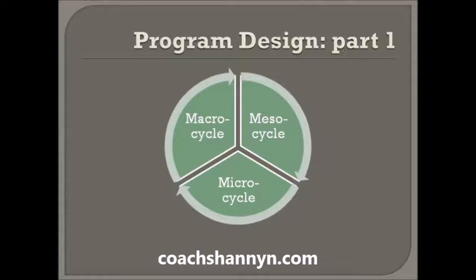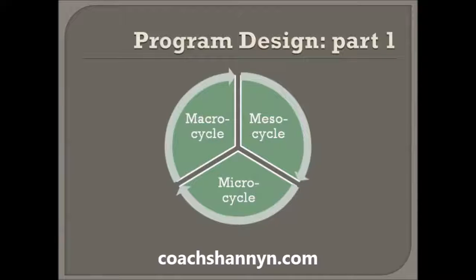Program design, part one. What you see is essentially an annual plan in a circle, parsed into three different areas. Macro cycle means an annual plan, and it can also mean an Olympic quad. Meso cycle can mean a training month, or anywhere from two to eight weeks depending on what type of periodization plan you're doing. Micro cycle is typically a training week, and can go from two days to seven days depending on your periodization plan.